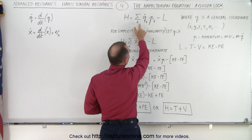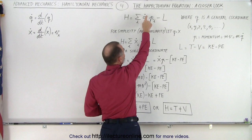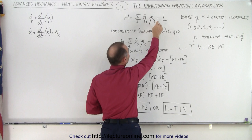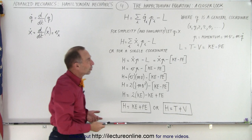You sum up all the various directions where you have the product of the time derivative of the position vector times the momentum, and then you subtract the Lagrangian equation from that.